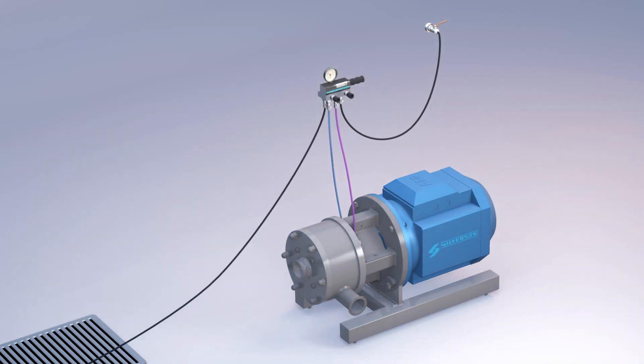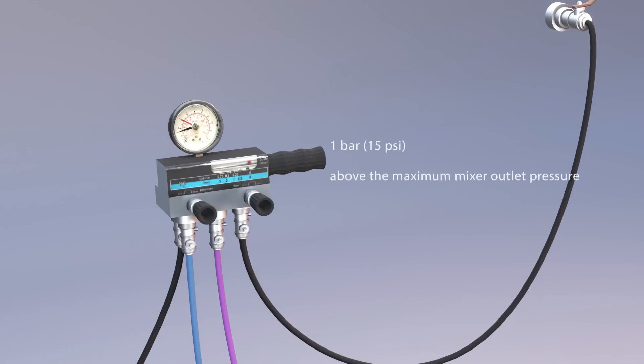To achieve this, the flow of sealant fluid needs to be restricted on the outlet side of the double seal chamber to pressurize it to one bar, 15 psi above the maximum mixer outlet pressure.